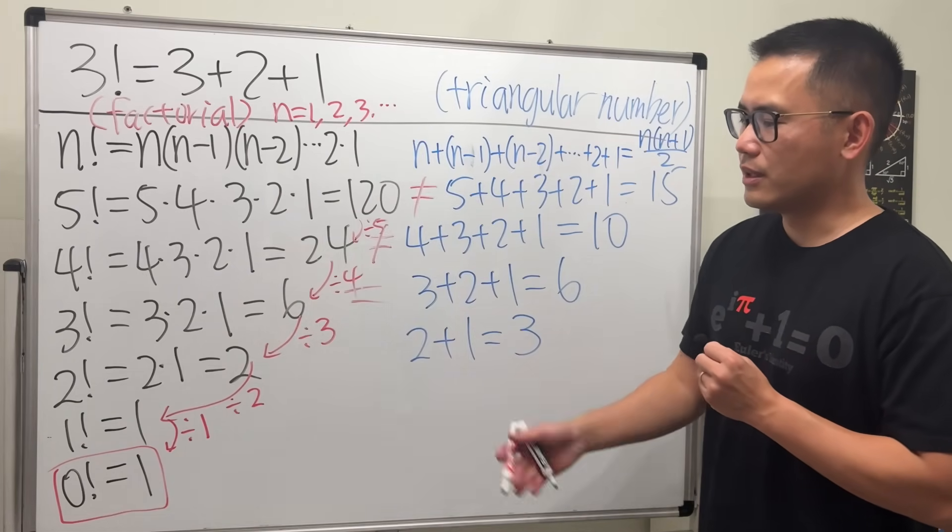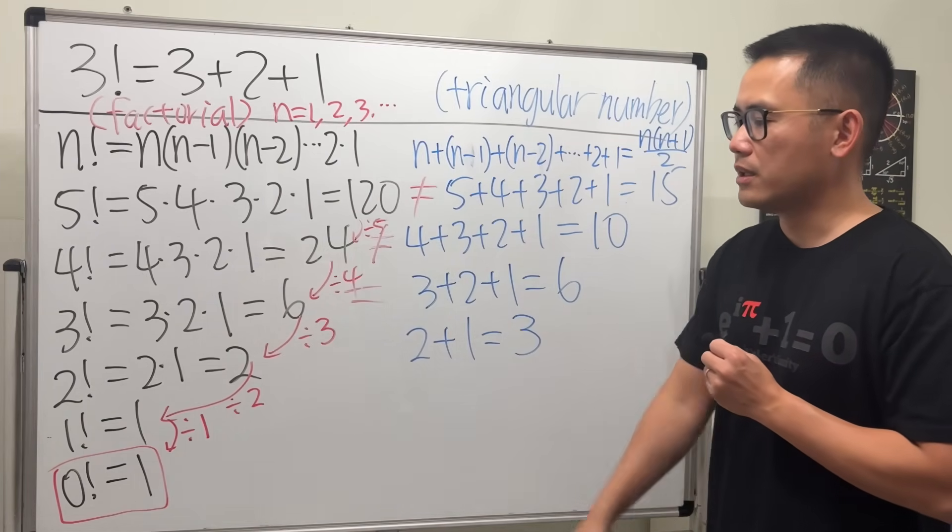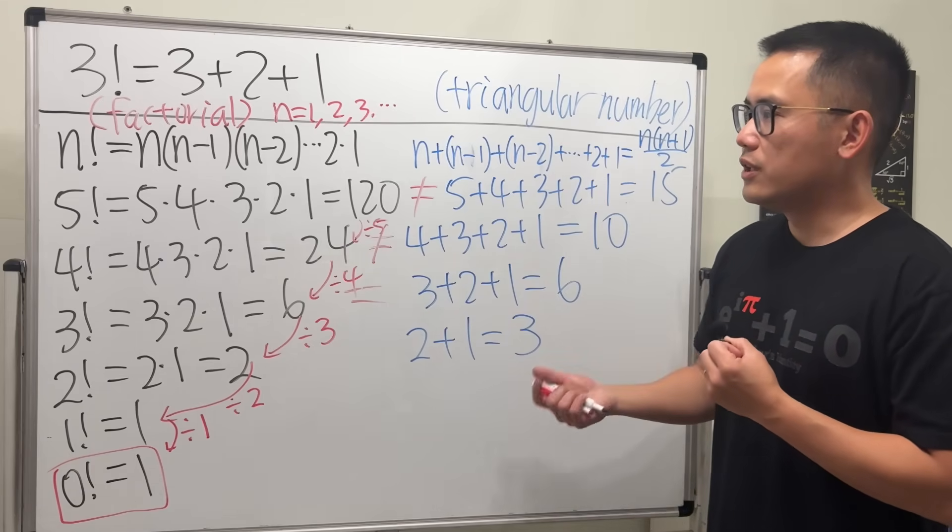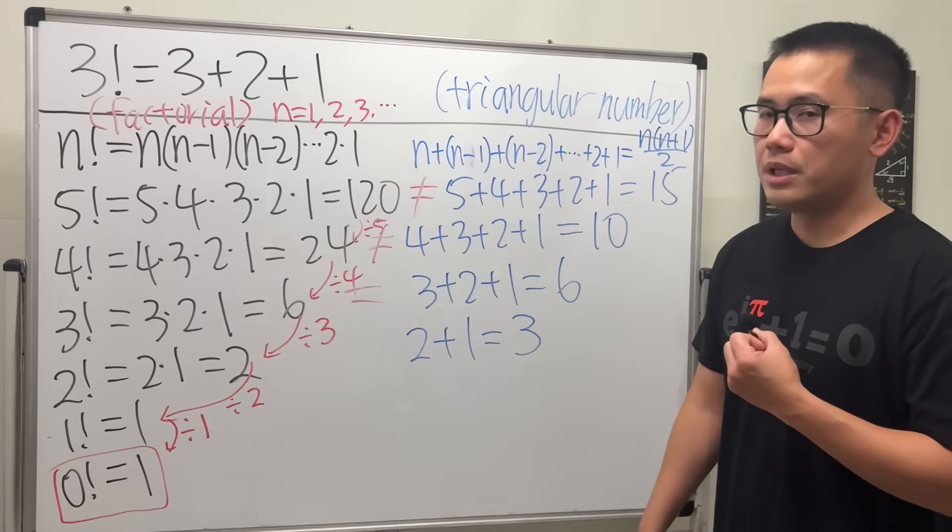I would say, because it doesn't look right, but you have to follow the pattern. Of course, there are other explanations, but I think this is the most intuitive way to understand why 0 factorial should be equal to 1.